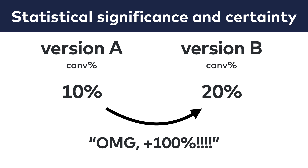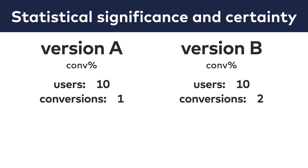Show me the math. What were the absolute values? In version A we had 10 users and one conversion, and in version B we had another 10 users and two conversions. Everybody can tell that the 100% conversion increase in this case is rather a result of chance and natural variance than something real. In other words, this result is not statistically significant.